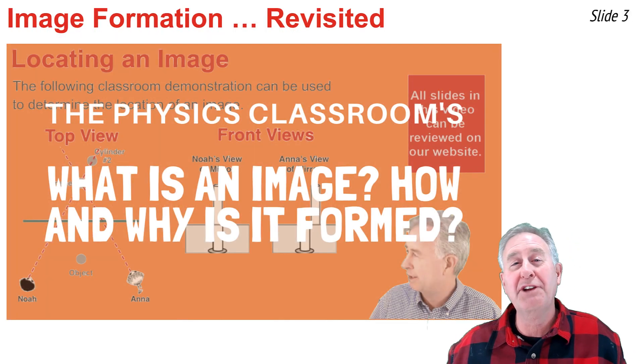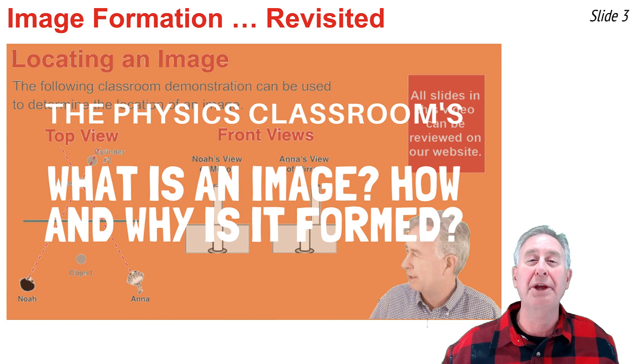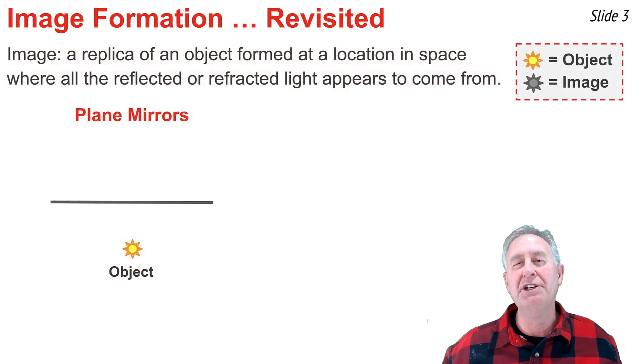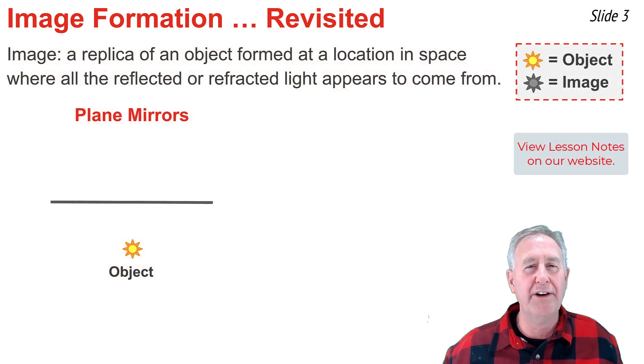This video is from our Reflection and Mirror series, and in it I discuss what an image is and how and why it is formed. I've left a link to the video in the description section of this one if you need to review it. An image is a representation or a replica of an object that is formed at a specific location in space where it seems to all observers as though the reflected or the refracted light is coming from.